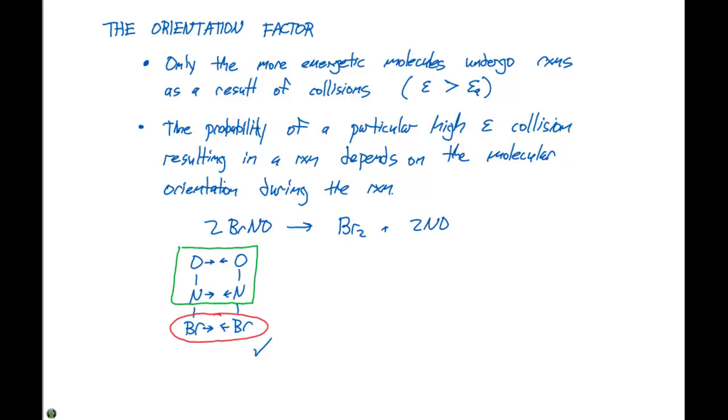But what happens if this molecule is going this way and it hits the back end of another molecule? In this case right here, the bromine and the oxygen are not going to form a product. So even if we hit this with enough energy, the orientation here will not allow for a suitable chemical reaction.